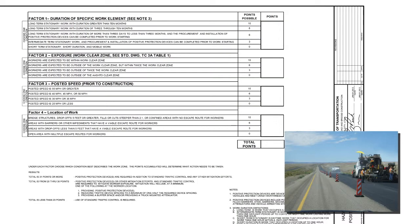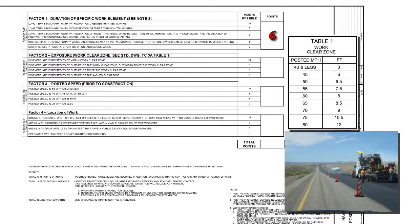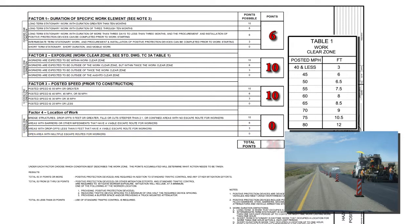This project will take up to one month to complete. We will go over the four factors. Knowing that this project will take a month, we will choose long-term stationary work with duration of more than 3 days to less than 3 months — 6 points. What is the exposure of the worker? This road has a posted speed of 70 miles per hour for a work clear zone of 9 feet. That being the case, we would choose workers are expected to be inside the work clear zone for 10 points. Next, we know the posted speed of 70 miles per hour for 10 points. Factor 4, location of work: the area is open and workers have multiple escape routes for 0 points. Now we have 26 accumulated points.